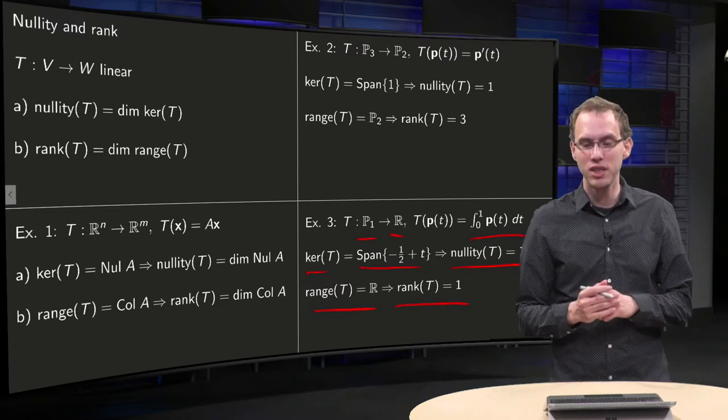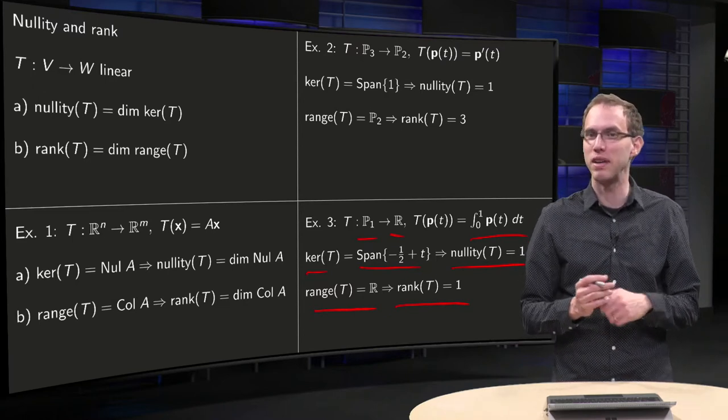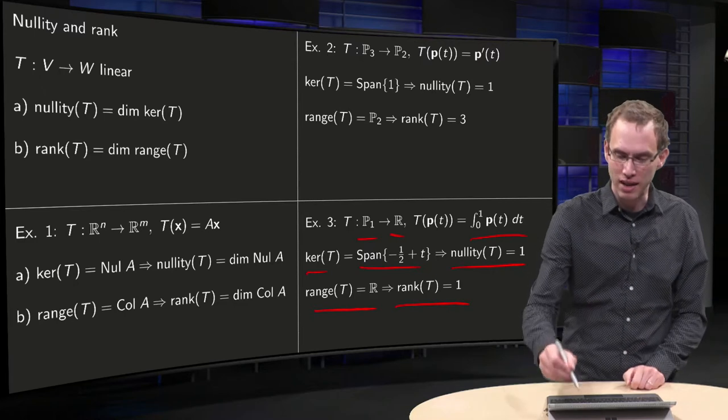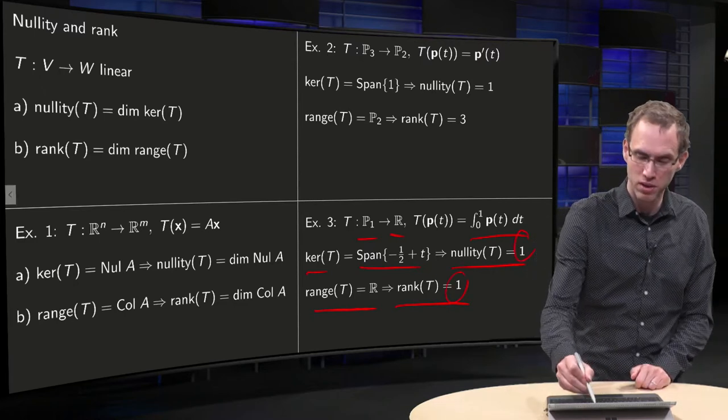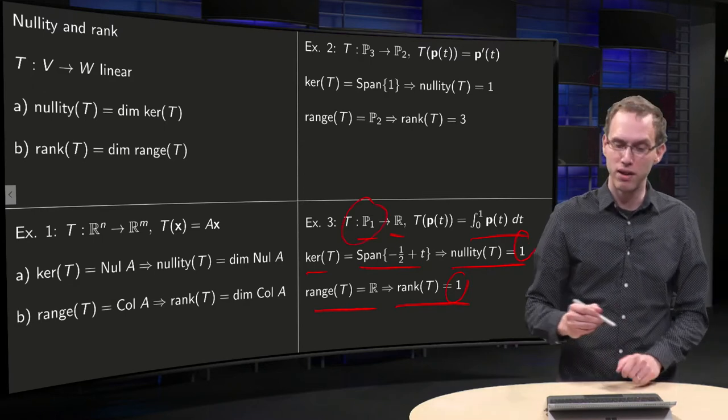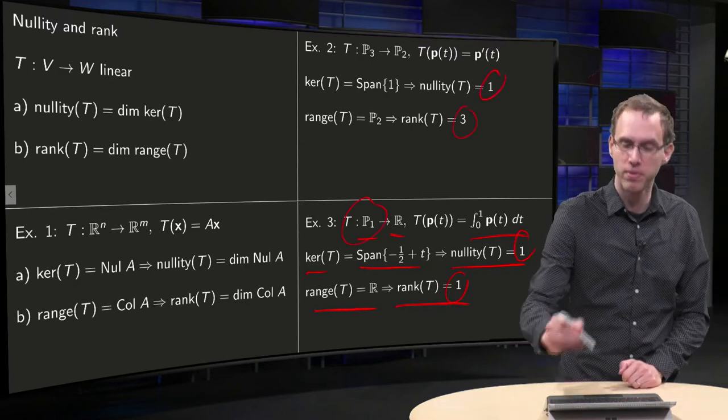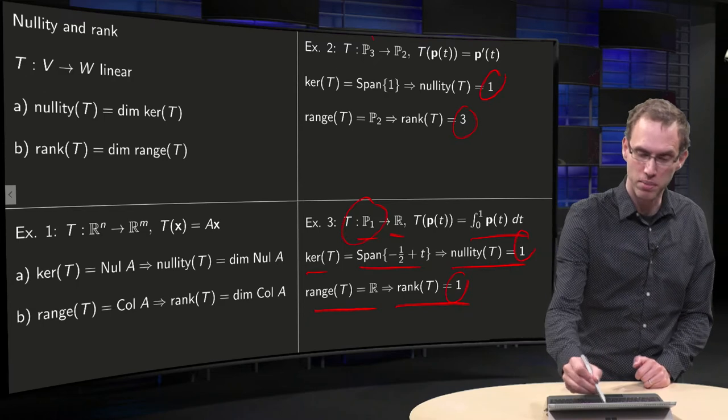And then you see in those examples something special happening already. If you add those numbers, one plus one equals two, which is the dimension of the domain. And if you add here three plus one equals four, which is the dimension of the domain.